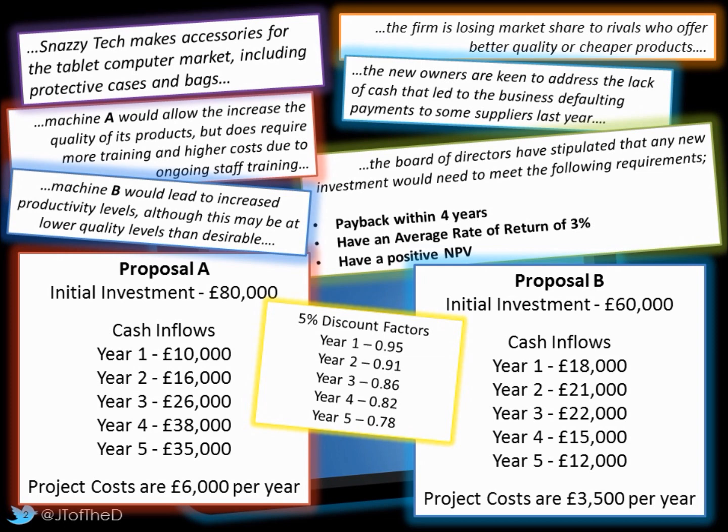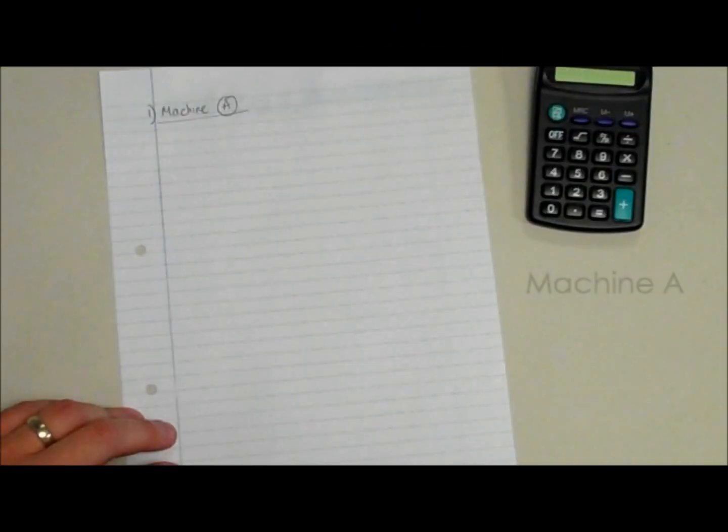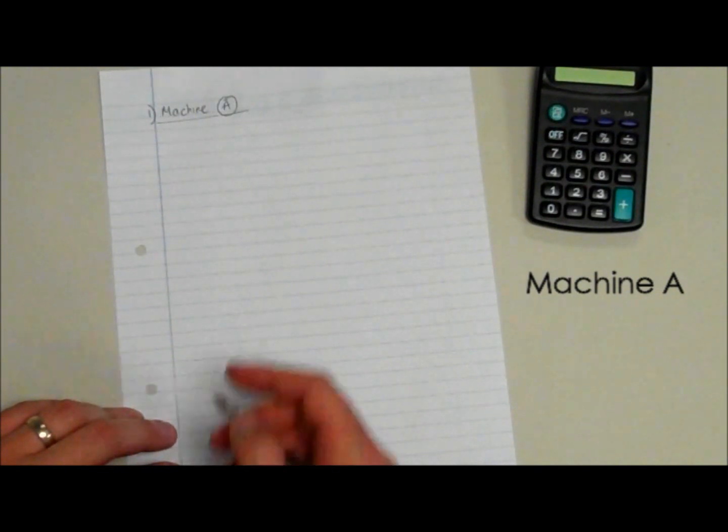The question was posed on a business called Snazitech who make computer tablet accessories. There's quite a lot of information that you could have picked out from the case study. Don't forget to check the case study as well as the appendices. Often you'll find there's targets and one proposal where you might have results of payback, average rate of return and net present value for one and just the calculation for the other.